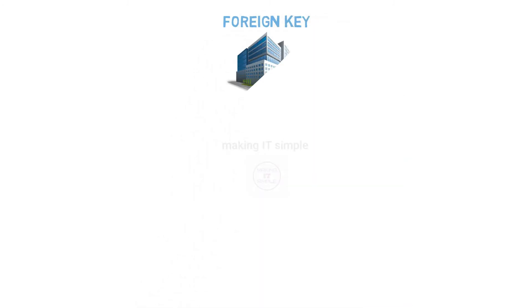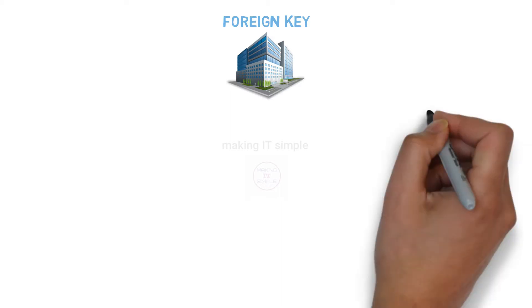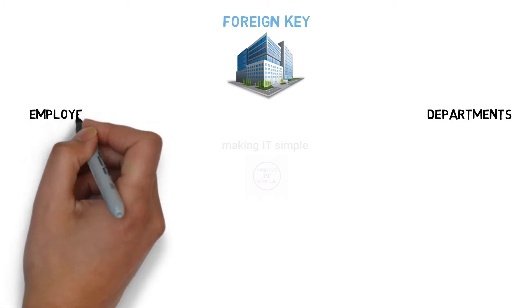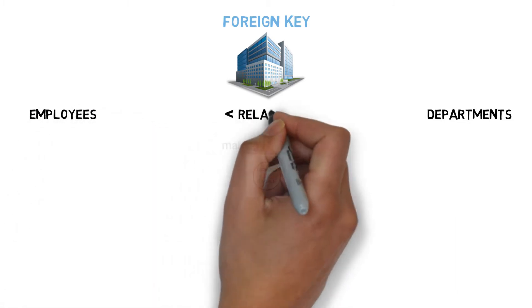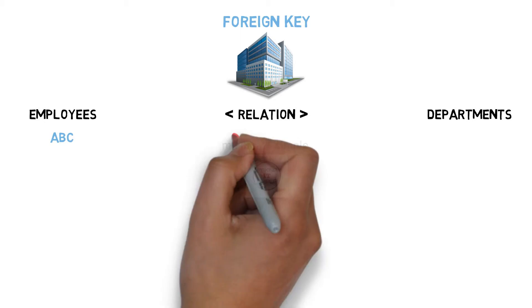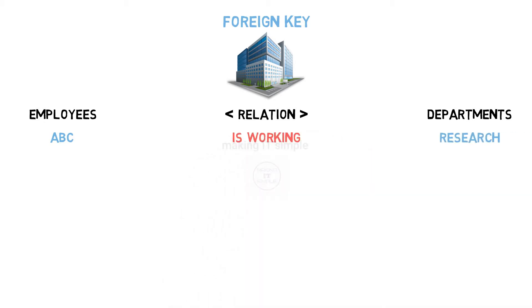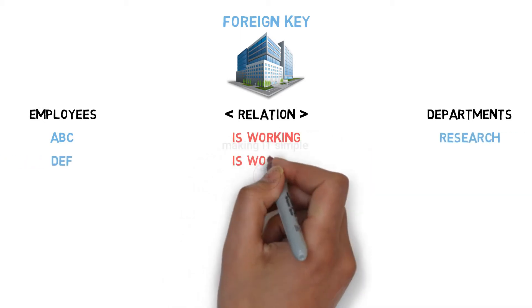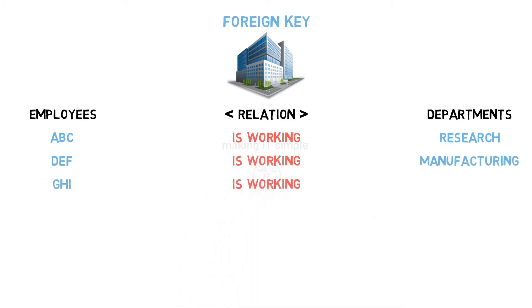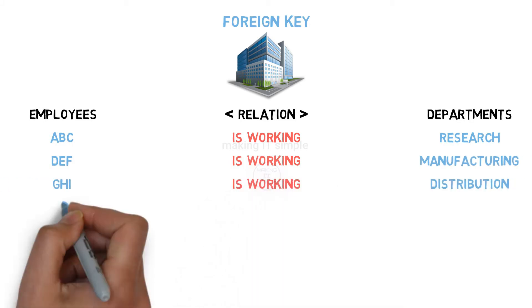Let me tell you a real life example first. Let us consider a company — there will be various departments and many employees working in that company. Now there is a relation between these two entities, like employee ABC is working in research department, employee DEF is working in manufacturing department, employee GHI is working in distribution department, and so on for every employee and department.